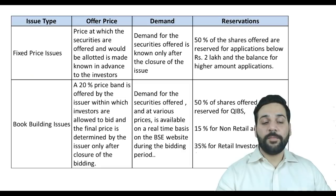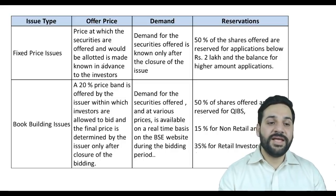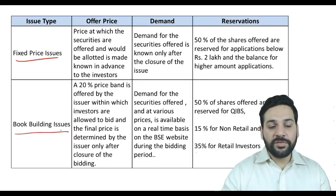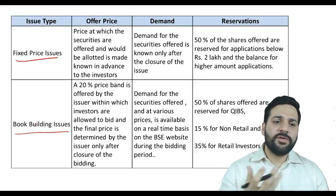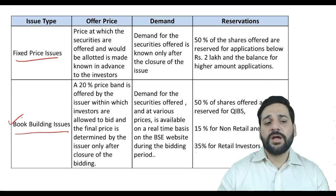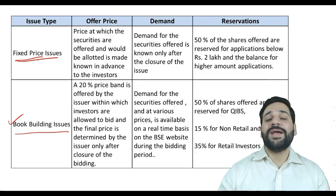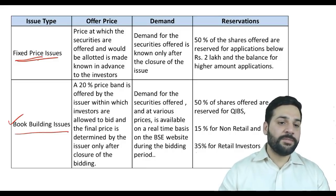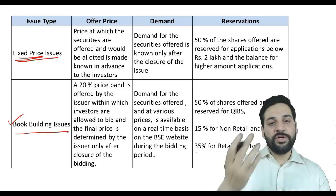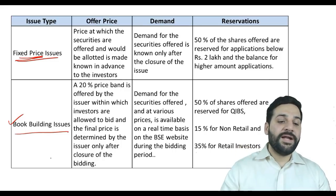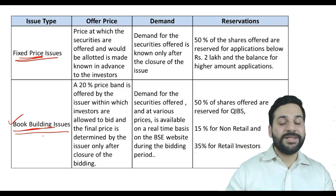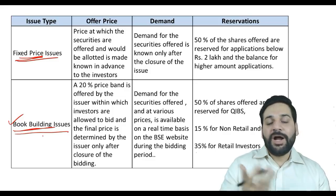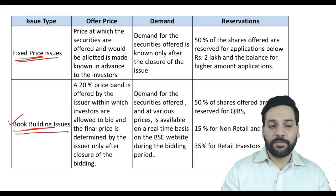There are basically two types of IPOs, differentiated by price. The most popular is the book building process, where the offer price is determined by demand and supply forces — by investor demand. In the other type, the fixed price issue, the offer price is determined by the company itself that is going to raise the money.